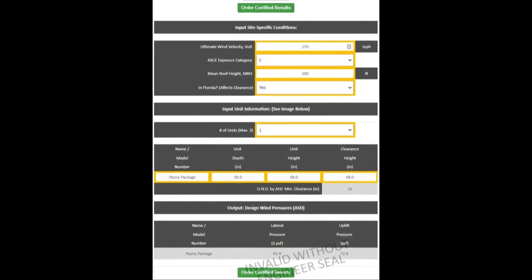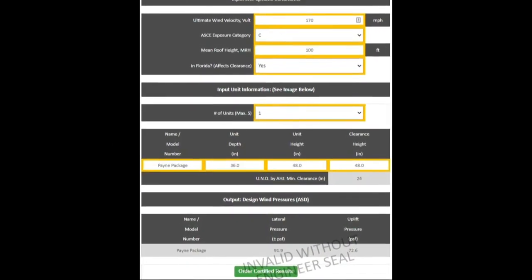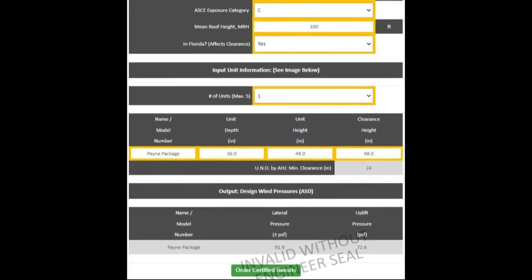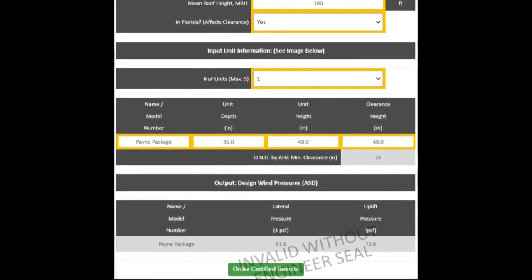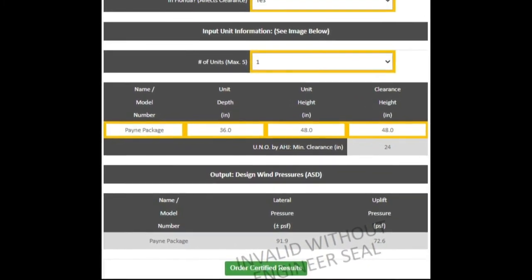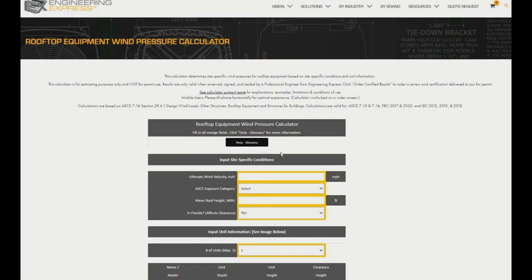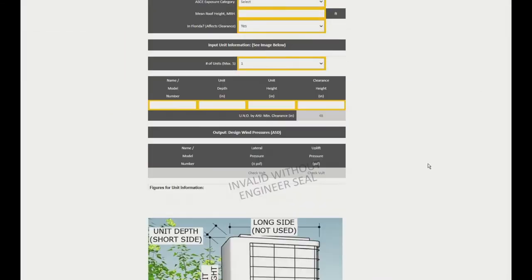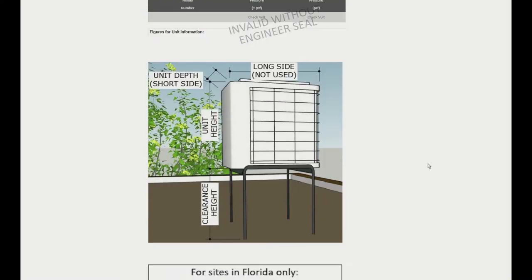You can enter the depth, height, and clearance for up to five units on a single roof and the calculator will report the allowable design wind pressure and Florida clearance height requirement for each unit. Use the illustrations below the calculator to better determine the required unit dimensions.